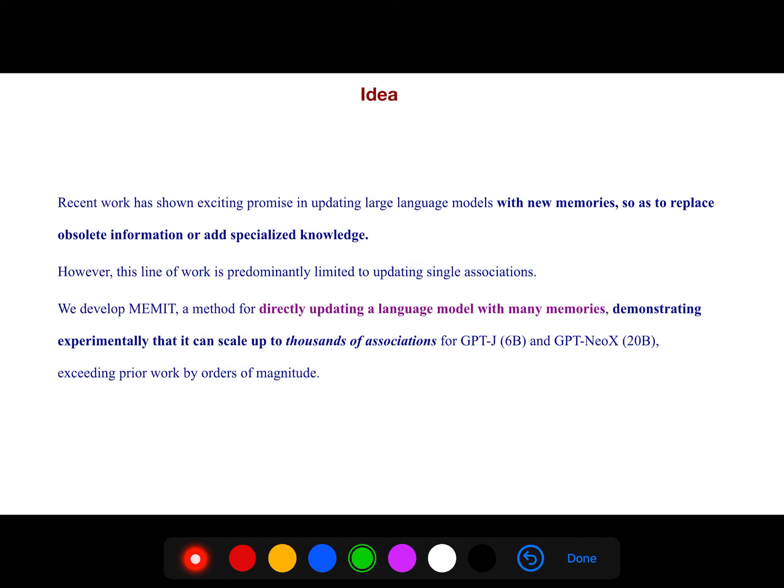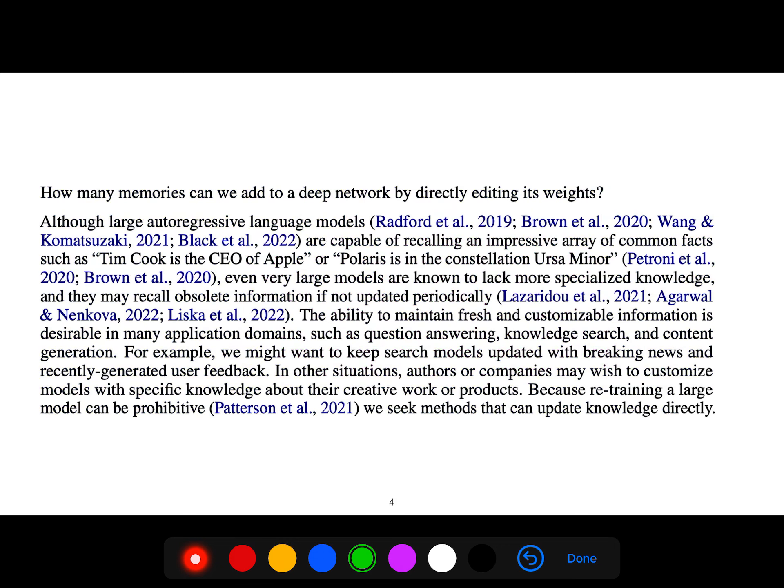For GPT-J 6B and GPT-NeoX 20B, how many memories can we add to a deep network by directly editing its weights?